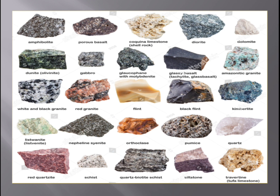Some rocks contain only one mineral and some rocks contain many minerals. For example, marble is made of calcite, and gemstones like ruby and sapphire are minerals. Gemstones are gemstones, but they are also minerals. In this way we can differentiate rocks and minerals.